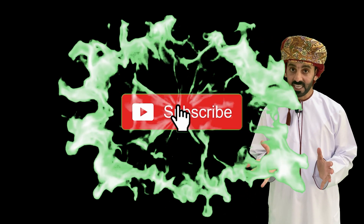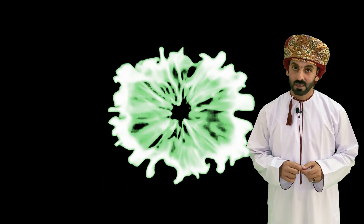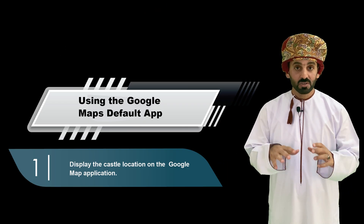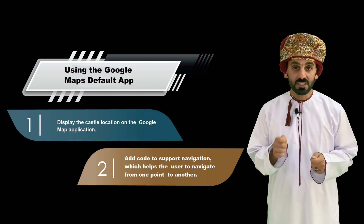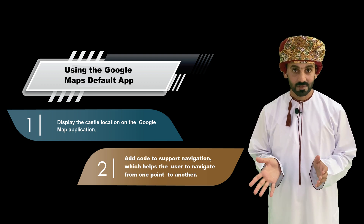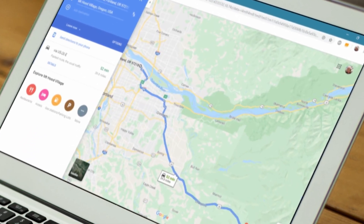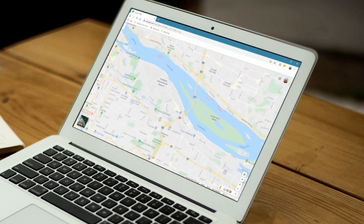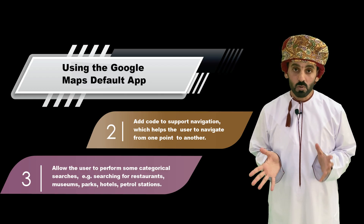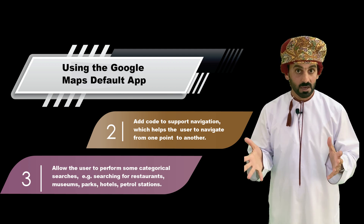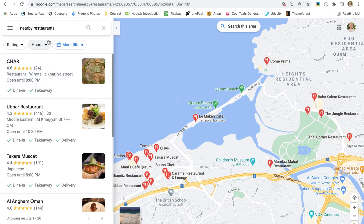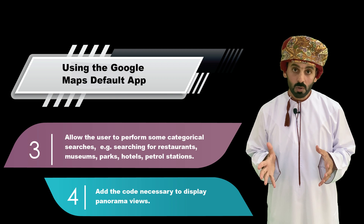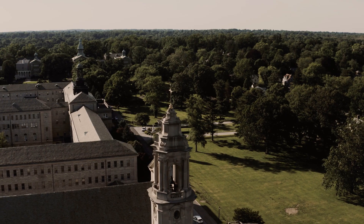Now let's take advantage of the existing external Google Maps application. Step one: add the code necessary to display the castle on the Google Maps application. Step two: add the code necessary to support navigation, which will help the user to navigate from their current location to the given castle location. Step three: allow the user to perform some categorical search, helping the user find out about restaurants, parks, museums, and metro stations located around the castle. Step four: add the code necessary to display some panorama views about the given castle.